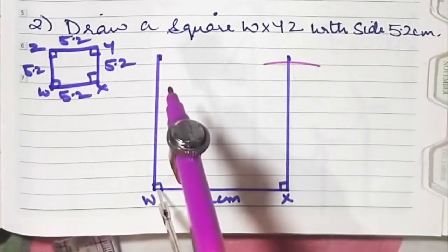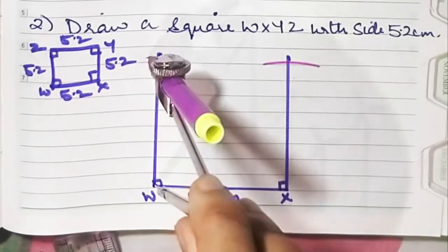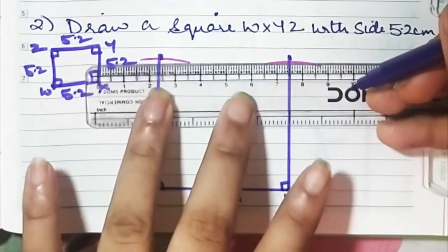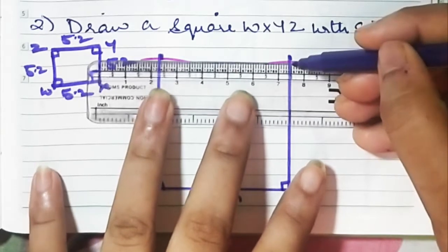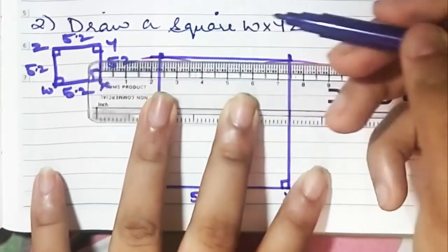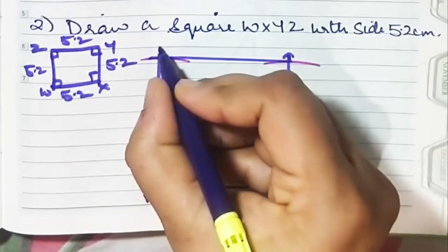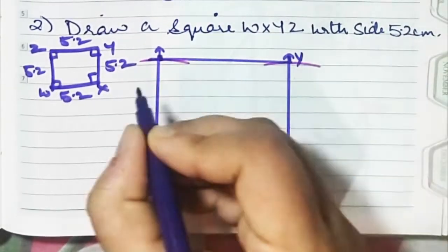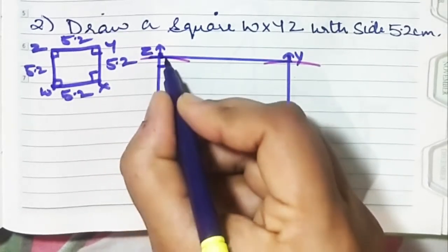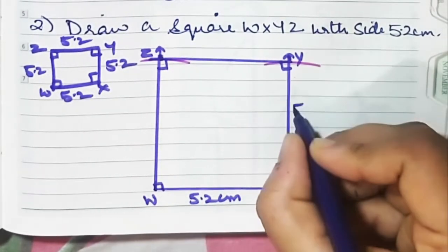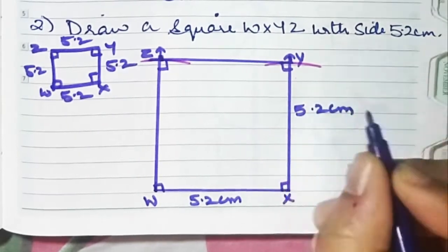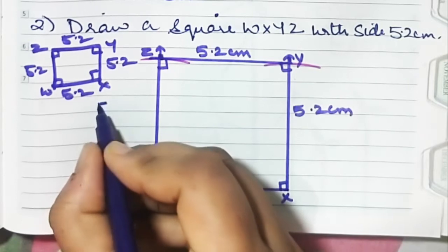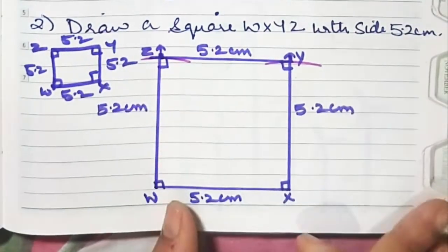Draw an arc, draw an arc. What you've got to do is join these arcs. So W, X, Y, Z — 90, 90, 90, 90. 5.2 centimeters, 5.2 centimeters, 5.2 centimeters. That's number two.